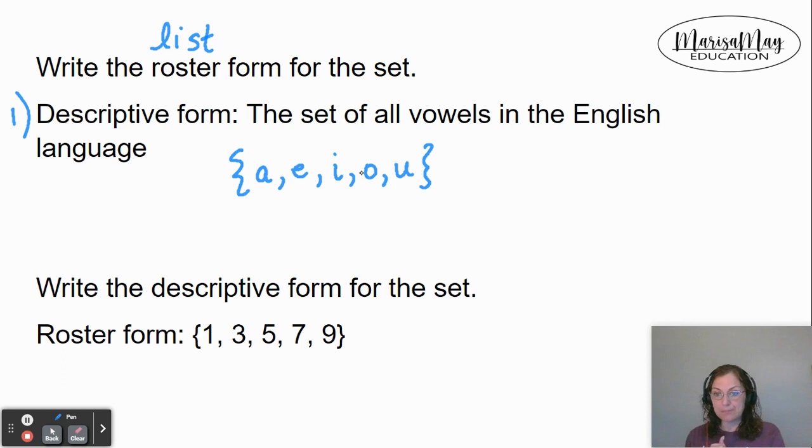Now if we want to go the other way, for number two we want to write the descriptive form. That means we want to write in words what these items are. For the set {1, 3, 5, 7, 9}...